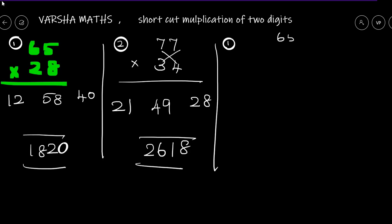So now say 65, 28. How do we multiply? You will take two multiply. Okay, this is 40. 5 times 8 equals 40. And 6 times 2 equals 12.